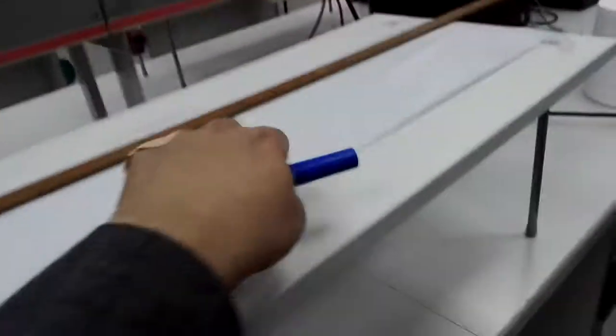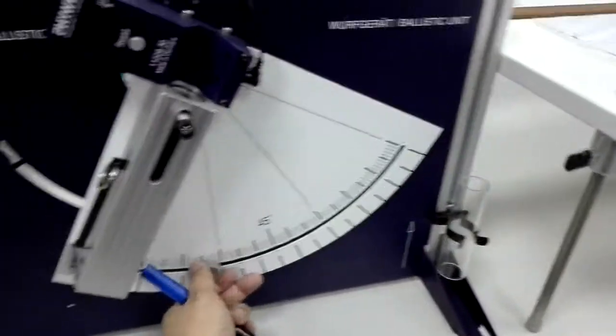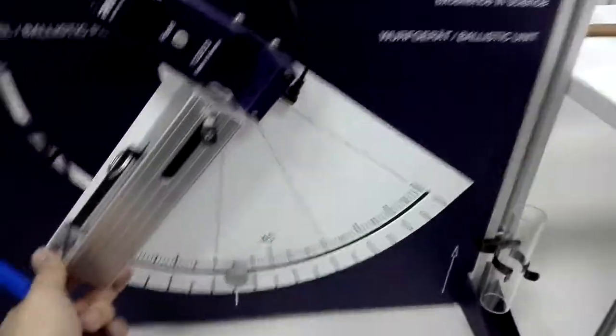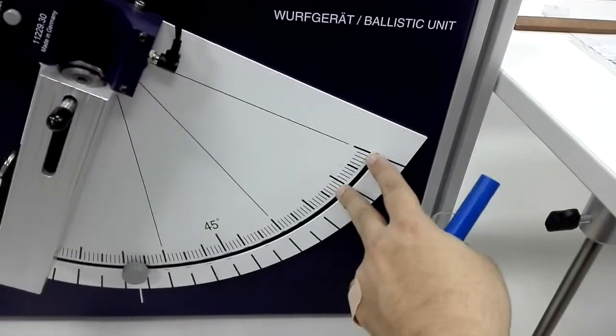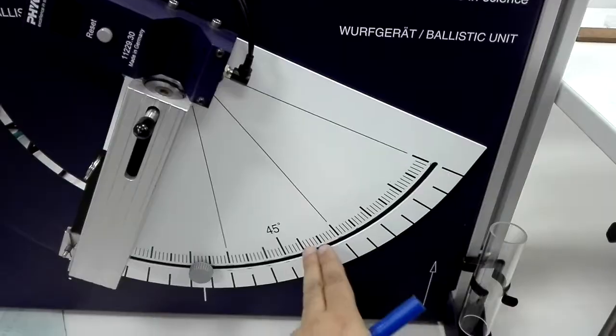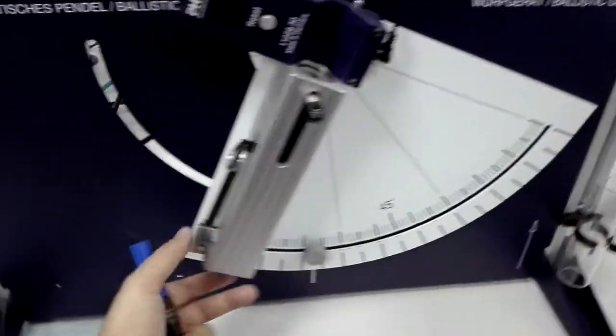There it goes and leaves a mark. So we measure this at different angles, we take readings at different angles. You can change the angle, so each of these divisions is 10 degrees, 20, 30. We start with 35 and 40, 45, and then we go up to 60.